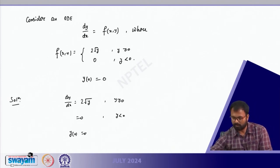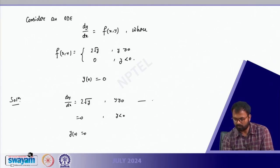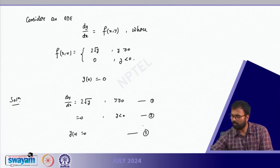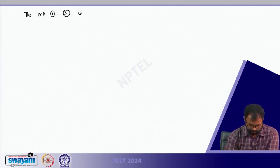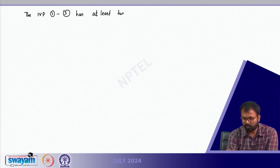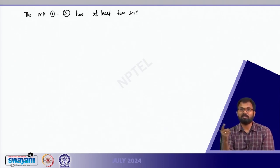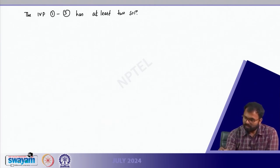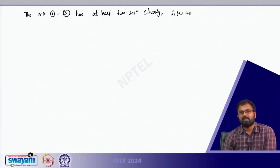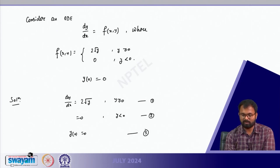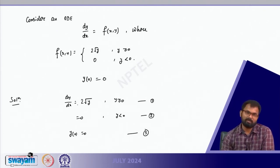Looking at this initial value problem (equations 1, 2, 3), it has at least two solutions. The first solution is easy to inspect: y₁(x) = 0. If you substitute x = 0, the initial condition gives 0, and substituting y = 0 into the equation satisfies it. So y = 0 is the first solution.